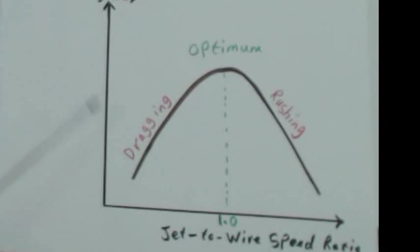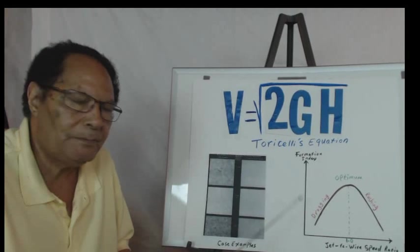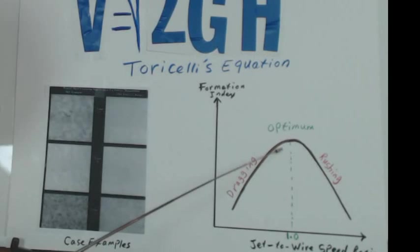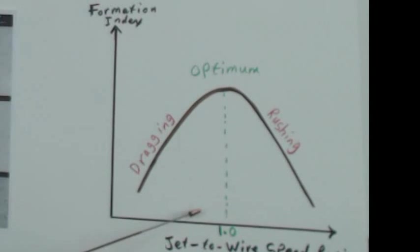If it is faster than that, the jet speed is faster, we call it rushing. You are familiar with these terms. If it is lower, we call it dragging. But how do we know that what you have, that jet speed, is really exactly the same as the wire speed?